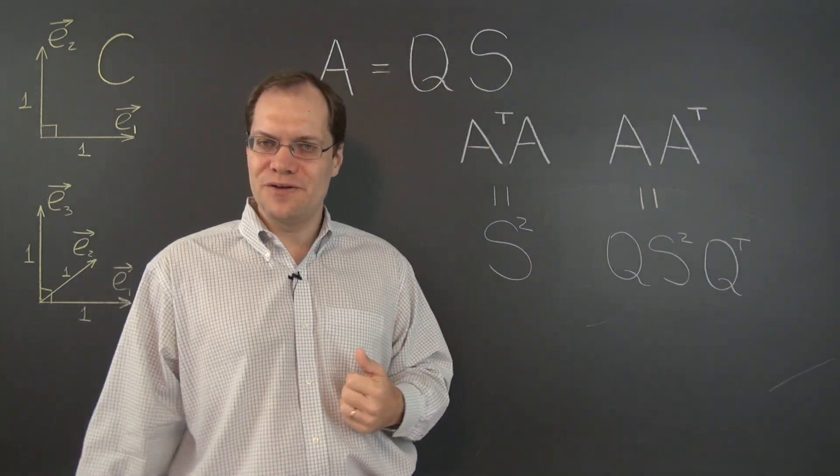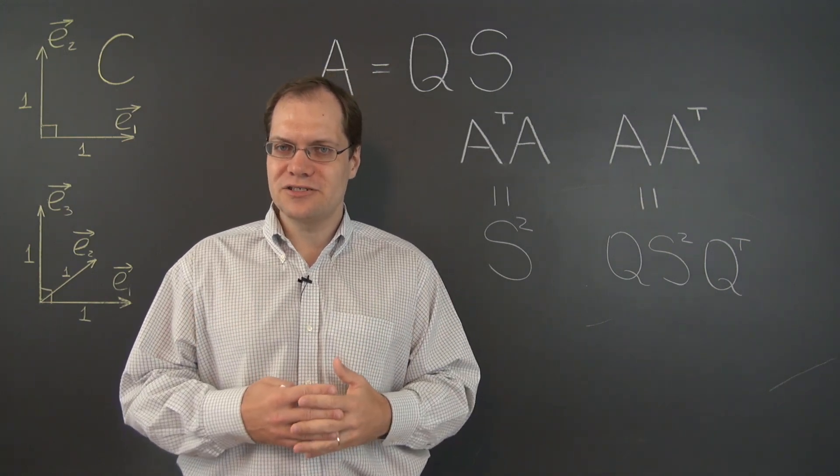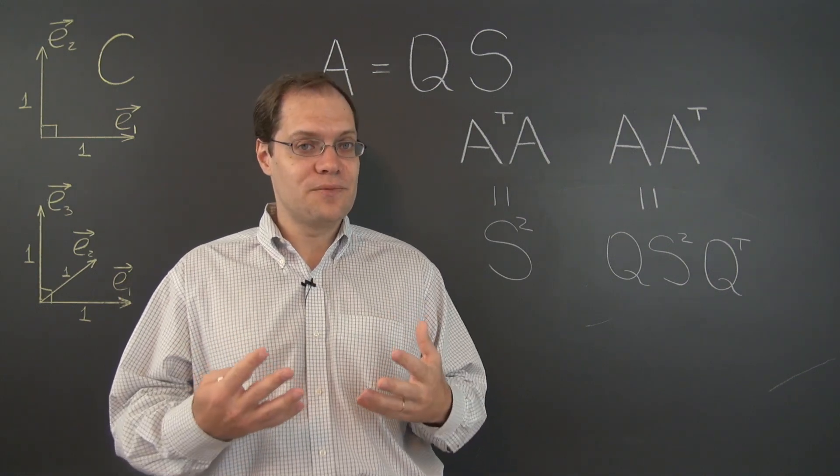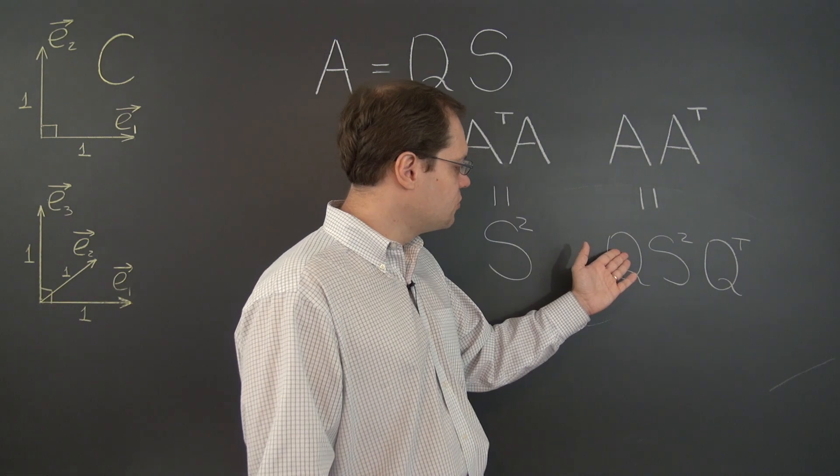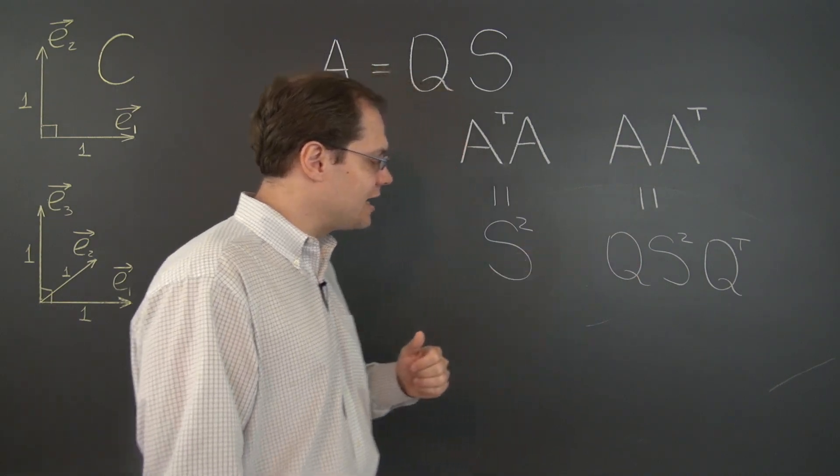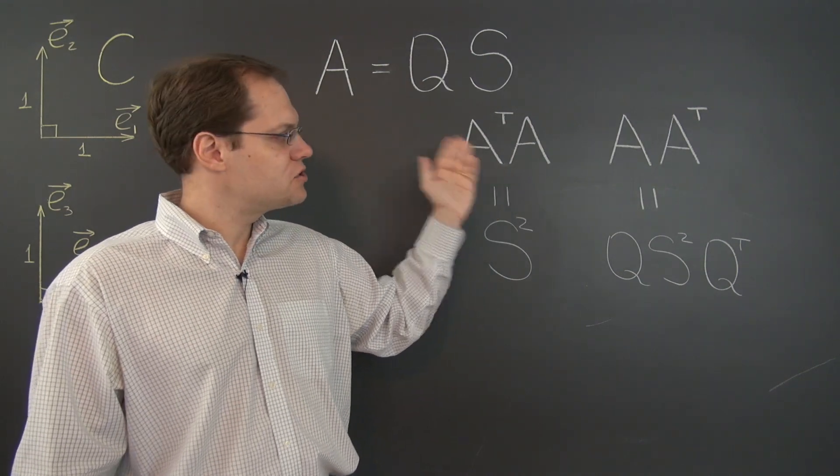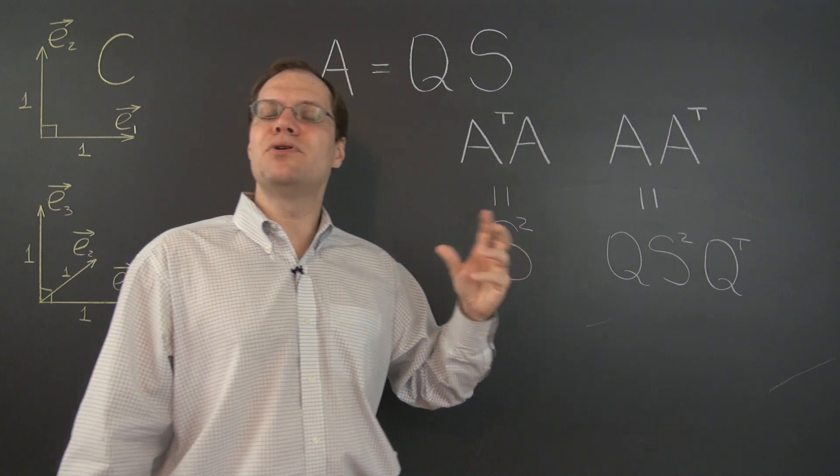And we have already seen before that matrices related by a similarity transformation have identical eigenvalues. And furthermore, their eigenvectors are related by the matrix Q. And because the matrix Q is orthogonal, our interpretation is that the eigenvectors of this matrix are related to the eigenvectors of this matrix by a simple rotation.